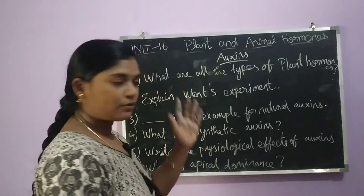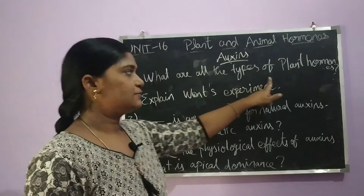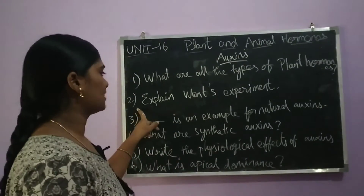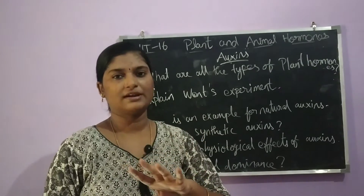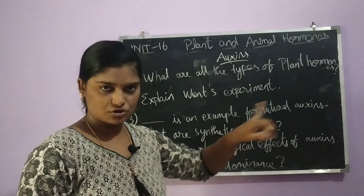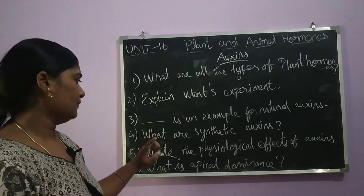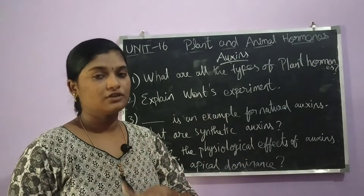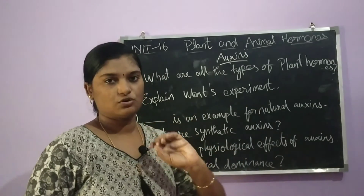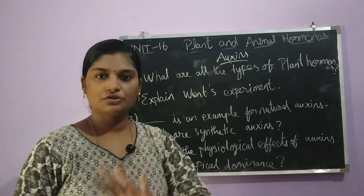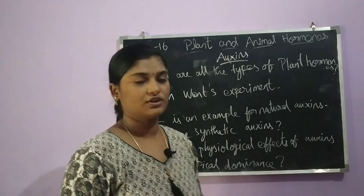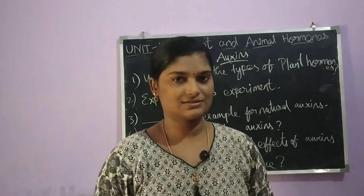Now, question section. First question: what are all the types of plant hormones? Second question: explain the Went experiment — this is a five-mark question. Third question: dash is an example for natural auxin — write the natural auxin name. Fourth question: what are synthetic auxins and give an example. Fifth question: write the physiological effects of auxin — five-mark question. Sixth question: what is apical dominance — important two-mark question. We will discuss the answers in the next segment. Thank you.